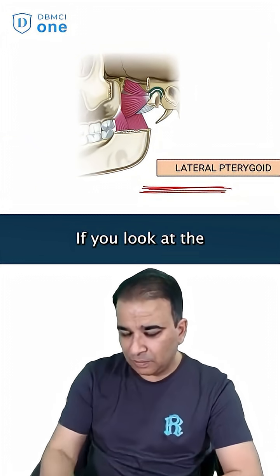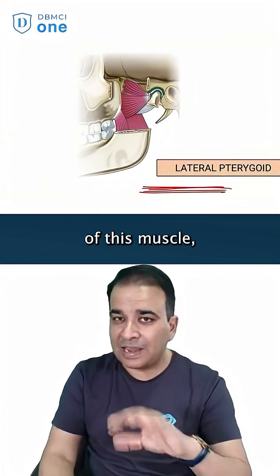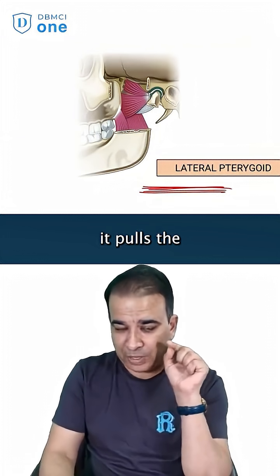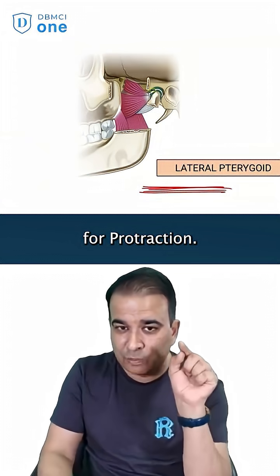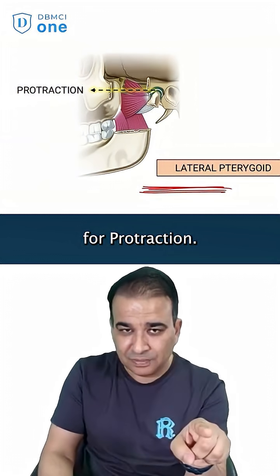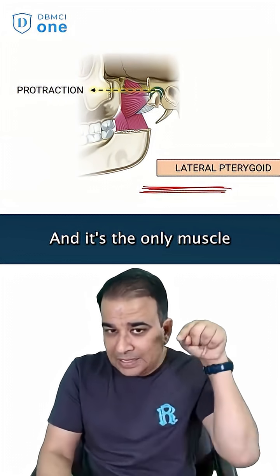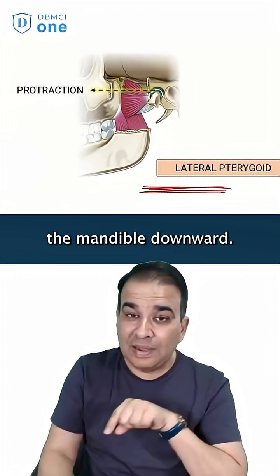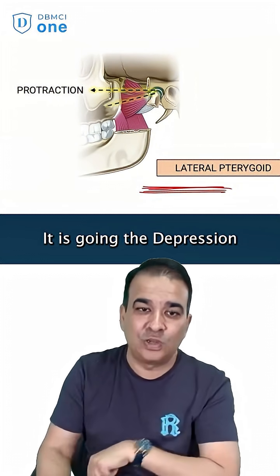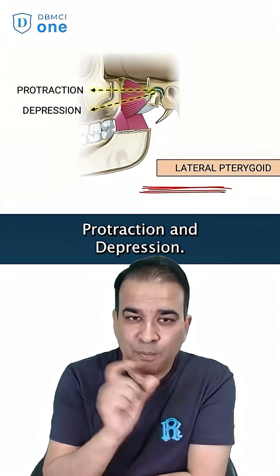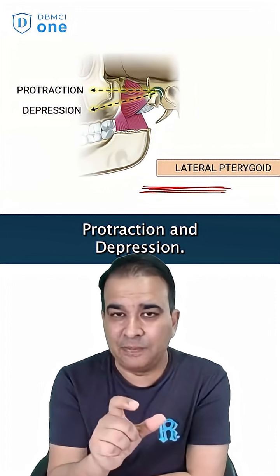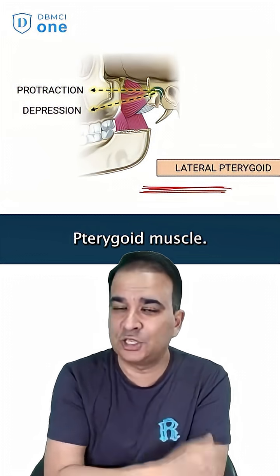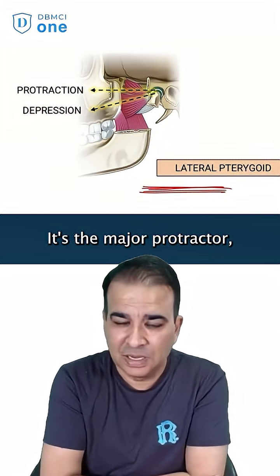If you look at the biomechanics of this muscle, when it contracts it pulls the mandible forward, so it is a muscle for protraction. And it is the only muscle which is going to pull the mandible downward — it causes depression. The unique action is protraction and depression; protraction and depression is the action of the lateral pterygoid muscle.